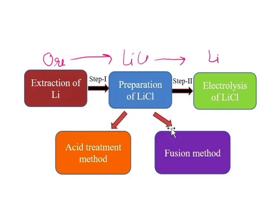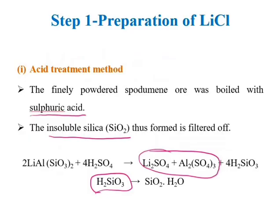To prepare LiCl from the ore, there are two methods: the acid treatment method and the fusion method. In the acid treatment method, finely powdered spodumene is boiled with sulfuric acid. This converts spodumene into lithium sulphate and aluminium sulphate, along with silica. Since silica is insoluble, we can filter it out, leaving Li₂SO₄ and Al₂(SO₄)₃ in the filtrate, while SiO₂ remains in the residue.